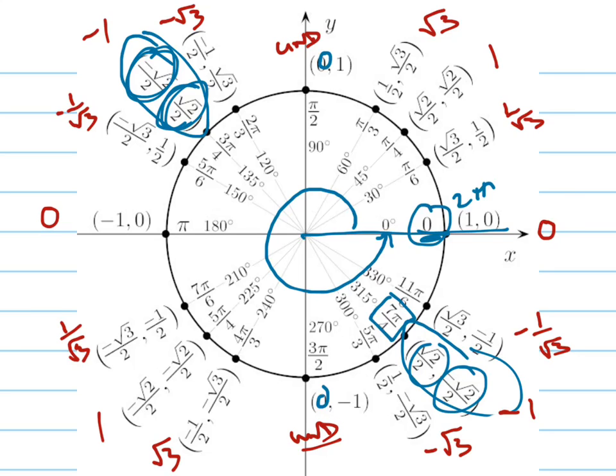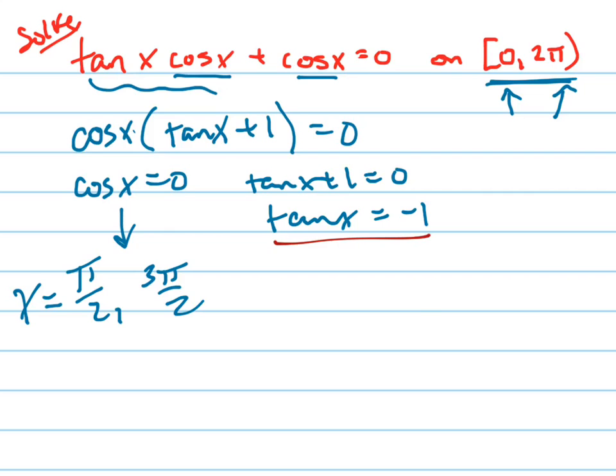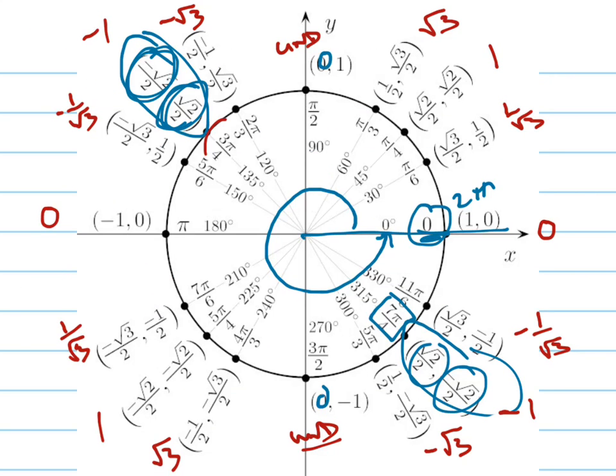Didn't take long, but it's good to do that. So when you have a problem like this, you can see right away where your tangent is negative 1, which is 3π over 4 and 7π over 4.